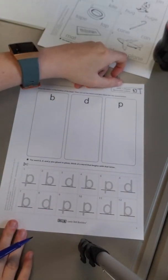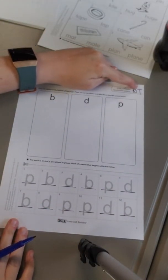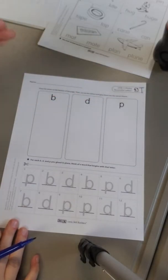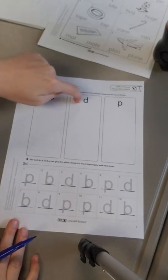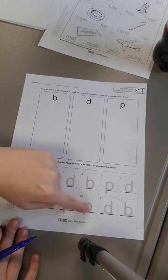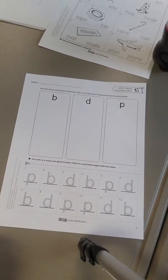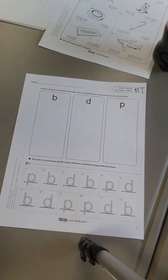All right scholars, this is level 7 phonics reversible letters sheet T. Please make sure you have the right page. Yours is going to have B, D, and P, and then have those letters at the bottom for you to cut out. Once you've found that correct page, make sure you write T on it, and then you can get started.